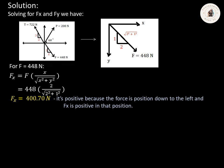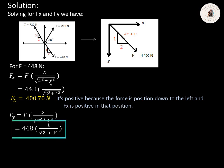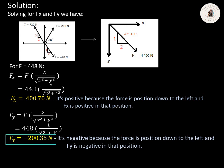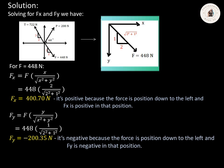Next, we compute Fy. Recalling the formula, Fy equals F multiplied by Y over the square root of X squared plus Y squared. F is 448, Y is 1, and X is 2, so Fy equals 448 multiplied by 1 over the square root of 2 squared plus 1 squared. Using our calculator, Fy equals 200.35 Newton. The sign convention is negative because the force is positioned down to the left and Fy is negative in that position.